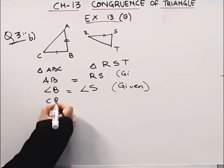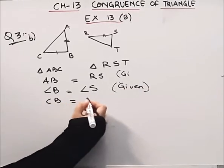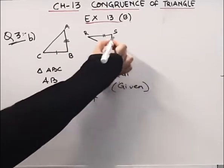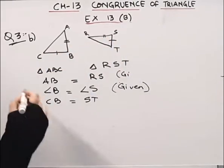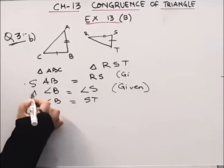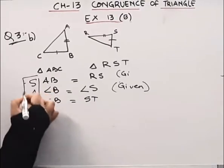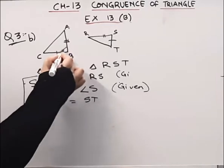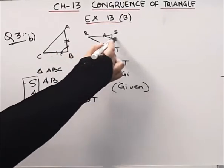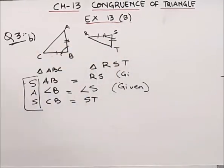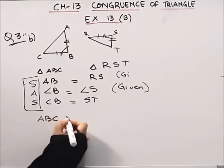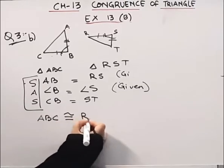Then we have CB is equal to ST. So here we have side, angle, side — the two sides are equal and the common angle is equal. So if we write it like ABC is congruent to RST, we can write it like this.